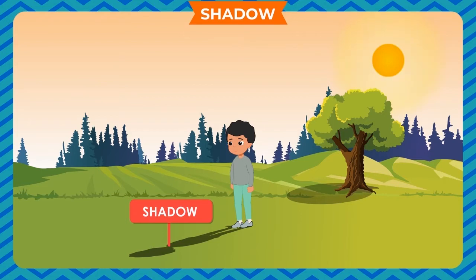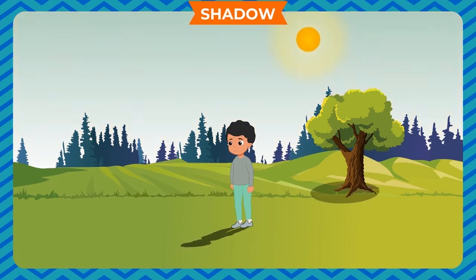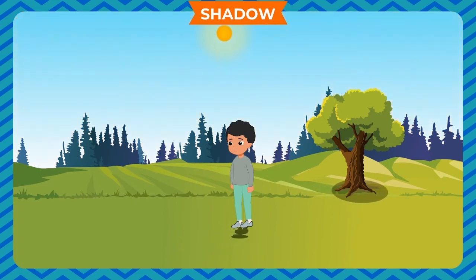When an object comes in the way of light, the light cannot pass through it and a shadow of that object is formed. Shadows are formed only in the presence of light. Shadows are always formed on the opposite side of the light source. They move along with the objects.